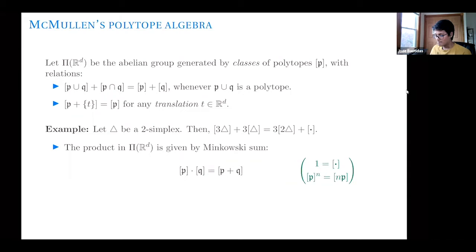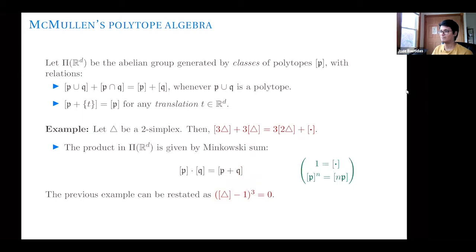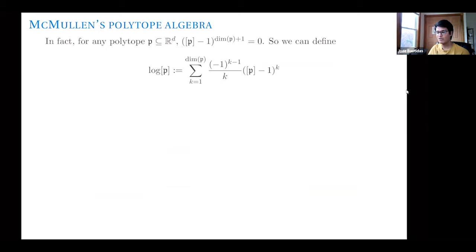The example we did before has a very compact form now: the class of the simplex minus one — minus the class of a point — raised to the third power gives zero. Expanding this out, you find it's the same identity as before: this class cubed, minus three times this class squared, plus three times the class of the simplex, minus one, equals zero. This happens for every polytope: if I take any polytope in R^d and take the class of the polytope minus one, this is a nilpotent element — there is a high enough power so that I get zero.